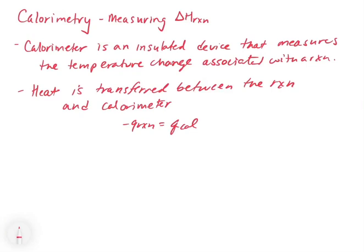The reason why it has to be insulated is so that it keeps all of the heat contained in the calorimeter. We want to make the calorimeter be the surroundings. We don't want the heat to be transferred to the outside of the calorimeter because then we couldn't measure it. We want all the heat to stay contained inside of the calorimeter so that we can measure it.